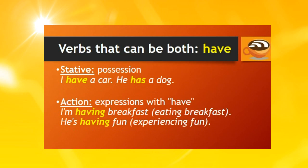Have can also be both a stative verb and an action verb. It's always stative with possession — for example, 'I have a car' or 'he has a dog.' But in certain expressions with have that do not involve possession, have is an action verb. For example, 'I'm having breakfast,' meaning eating breakfast, or 'he's having fun,' meaning experiencing fun. In these cases, have is an action verb and can be used in continuous form.